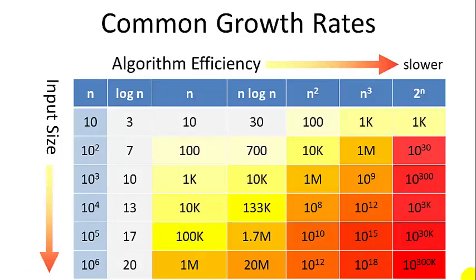So some common growth rates. You can see the size of input on the side here, 10, 100, 1000, up to 1 million. If an algorithm runs in log n efficiency, for an input size of 10, then there are only three operations. Up to a size of 1 million, still only 20 operations. So log n algorithms are extremely fast.